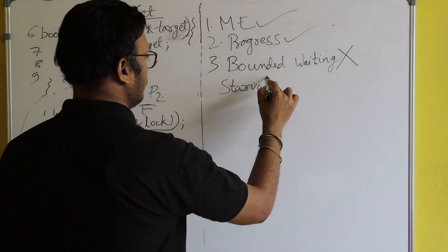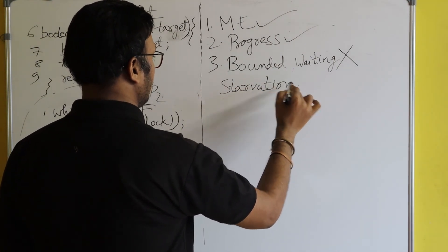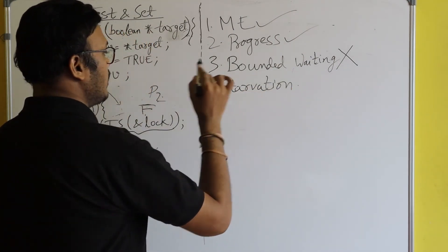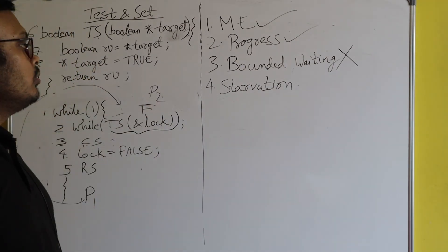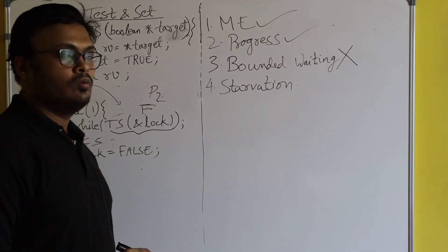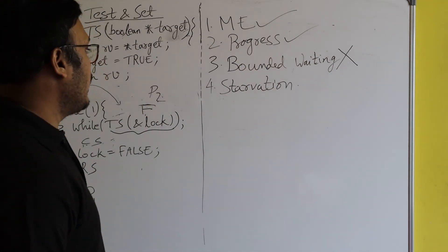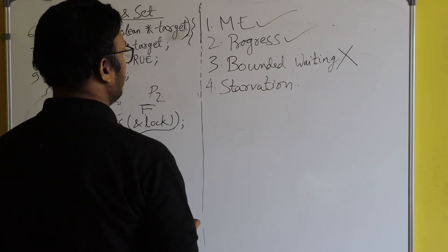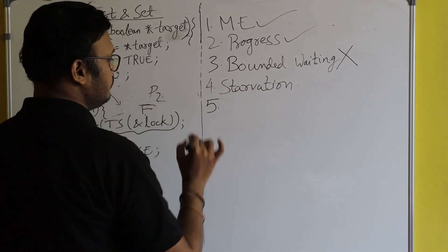Starvation is possible — P2 could wait infinitely because before P2 can enter the critical section, P1 keeps entering it. This continuous pattern means there is starvation for process P2.